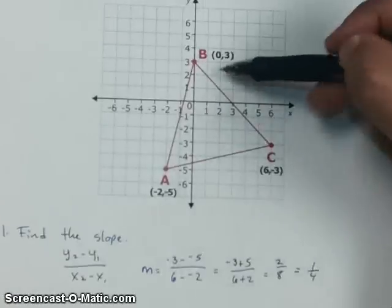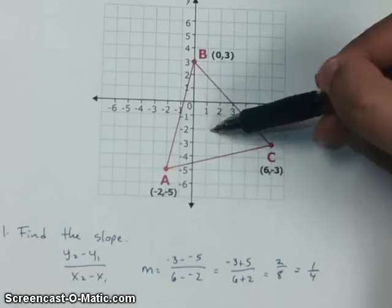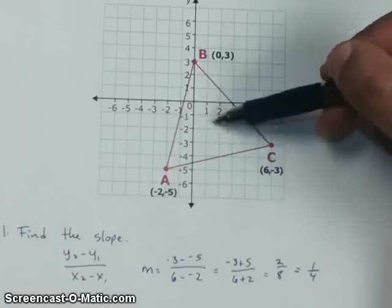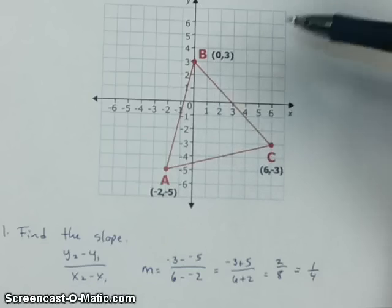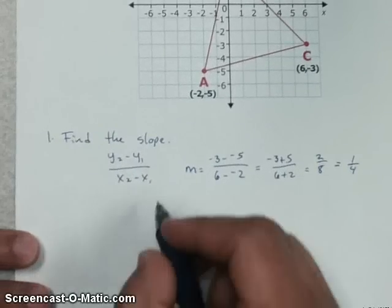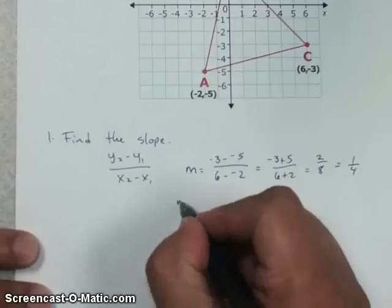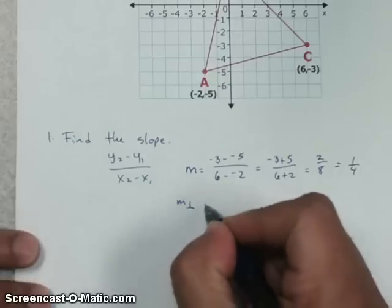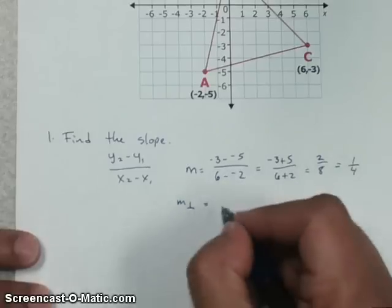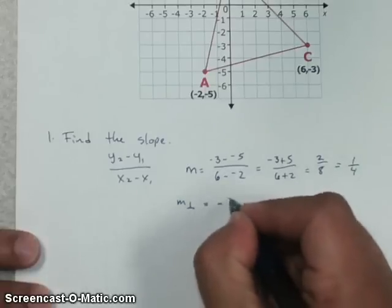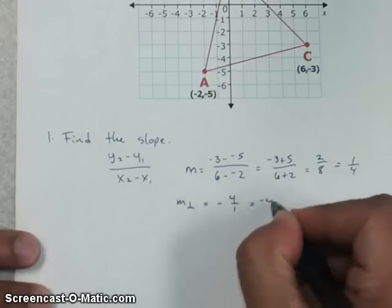Now, the altitude has to come down straight from point B. It's got to come straight down to intersect with side AC at a 90 degree angle. So to do that, what we really need is we need the perpendicular slope, which is going to be the opposite reciprocal of 1 over 4. So that's going to give me a negative 4 over 1, which is just a negative 4.